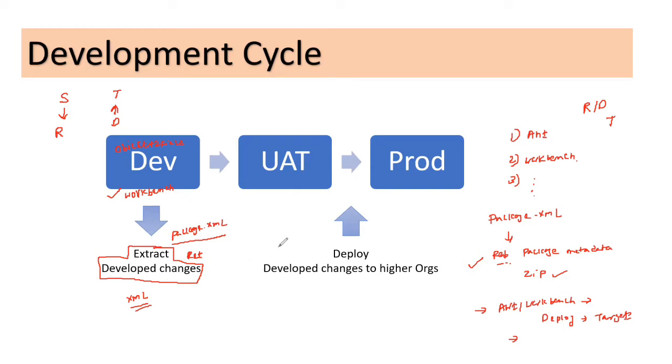Once I have this content, again, I need to log in into the other org using my Workbench. So let's say if I want to deploy these changes to the UAT org, I need to connect to this org and I need to deploy these changes to this org. So again, we need to give the input of the zip file.